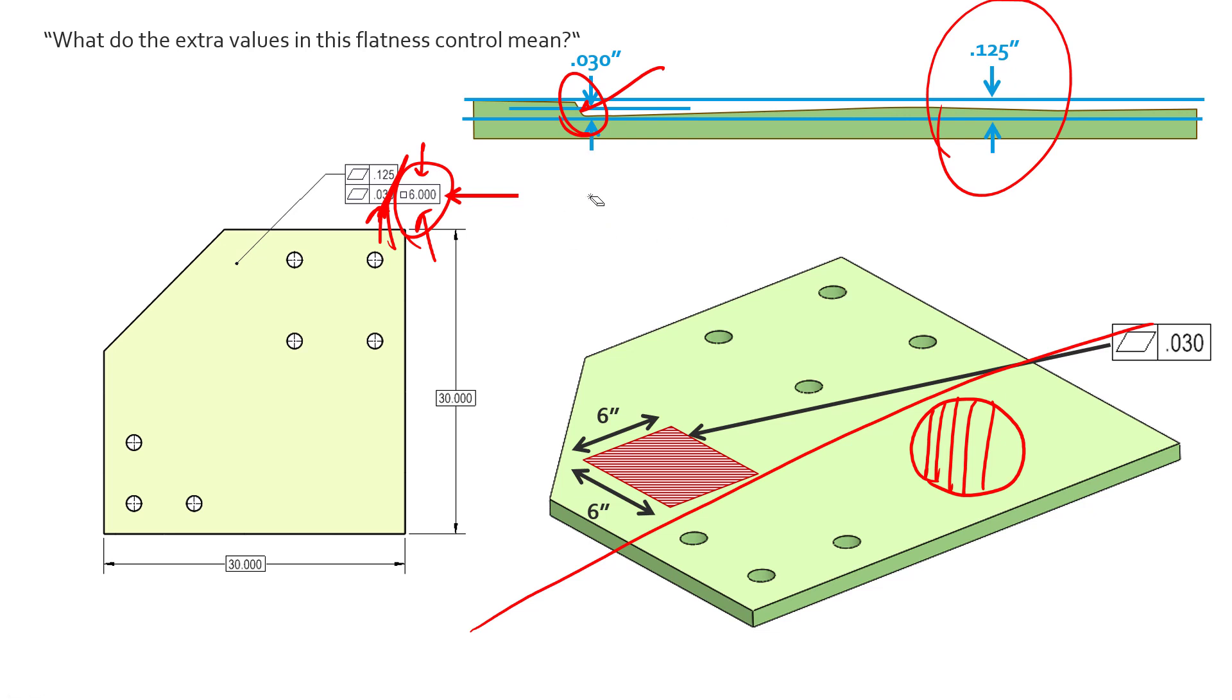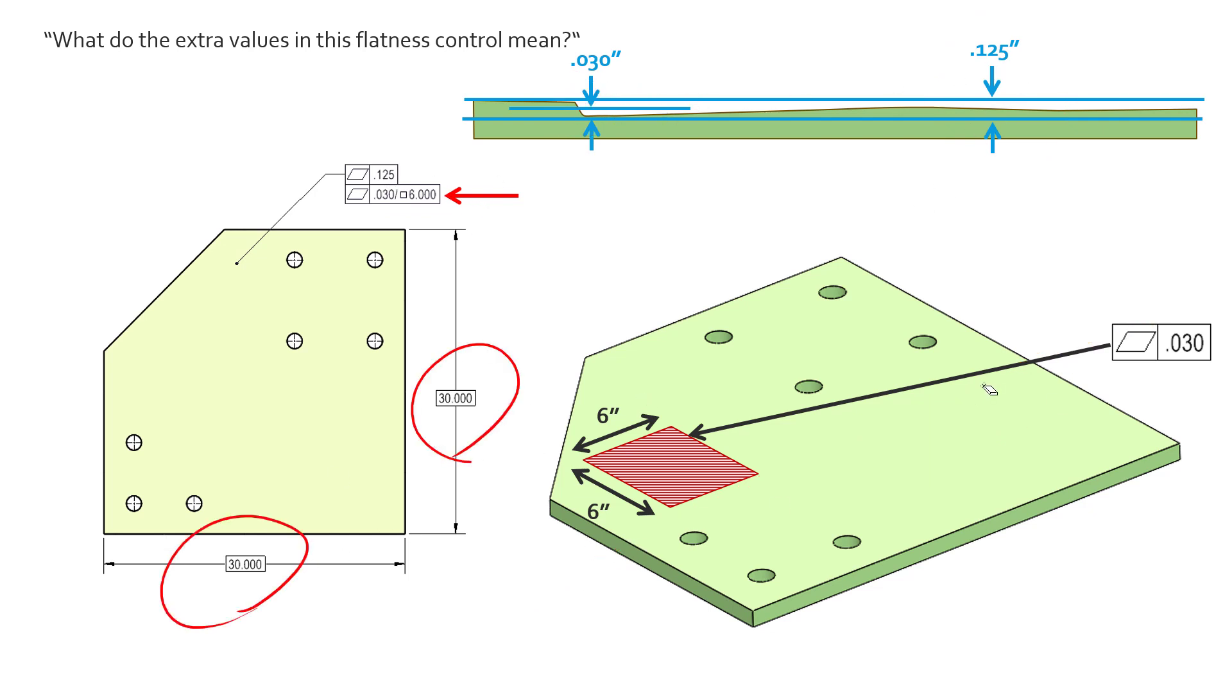Hopefully that helps clarify things if you do see this on your drawings. It's a useful thing to use, especially for large format parts like we see here. You can even put it on straightness. A lot of times people will use this on straightness and check the straightness per unit length.